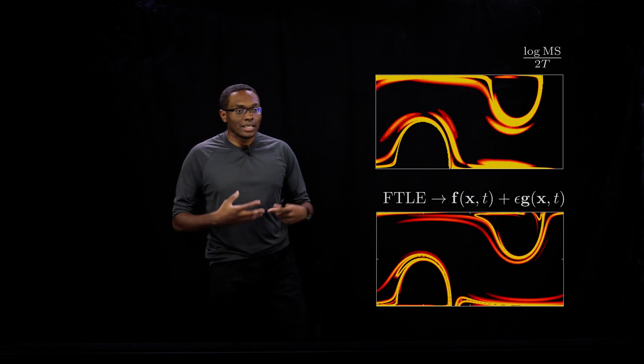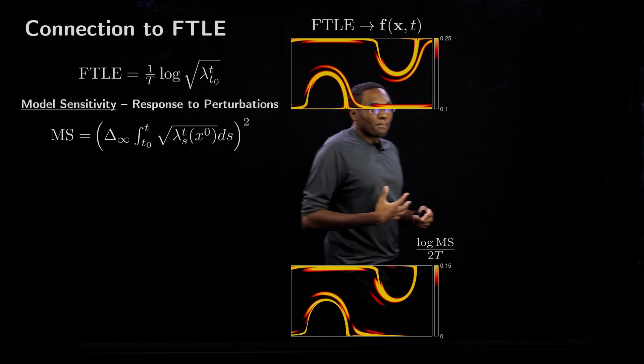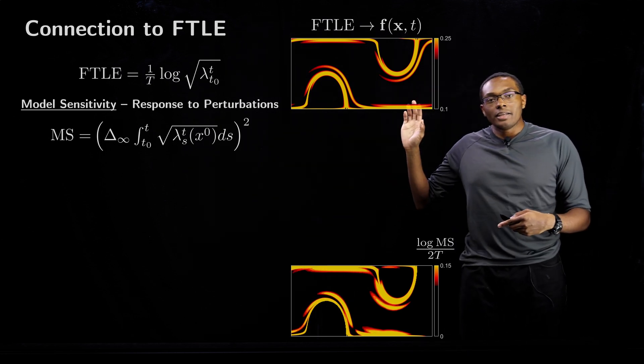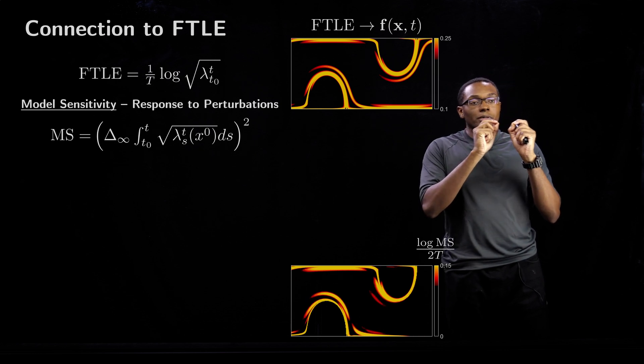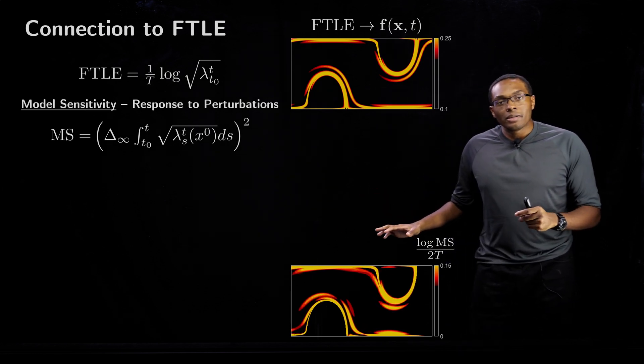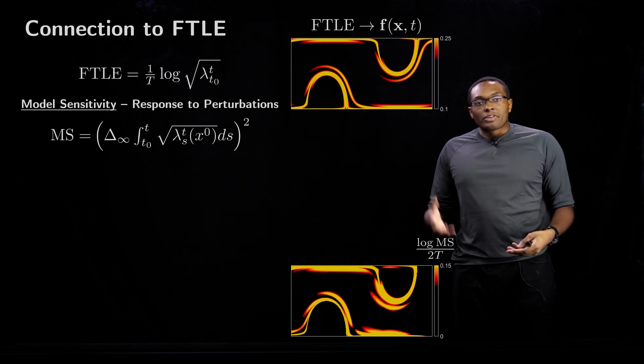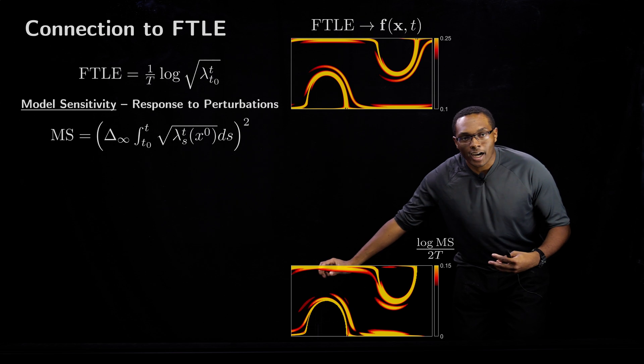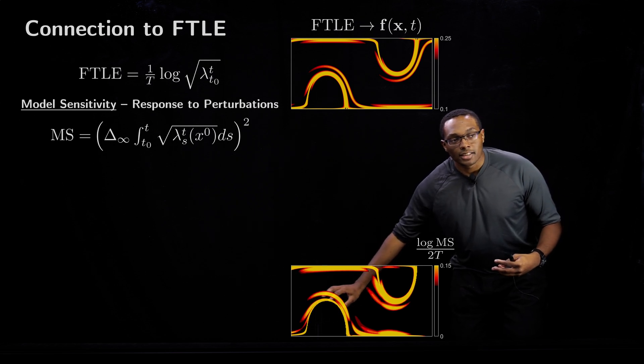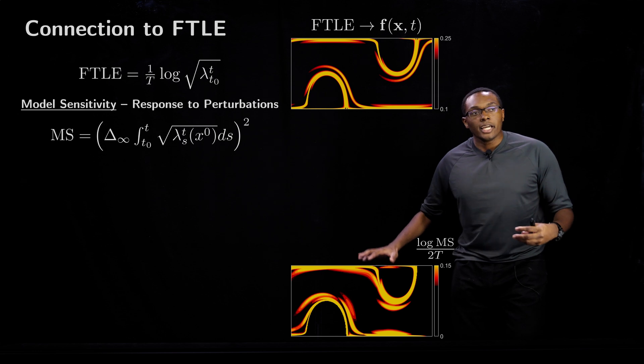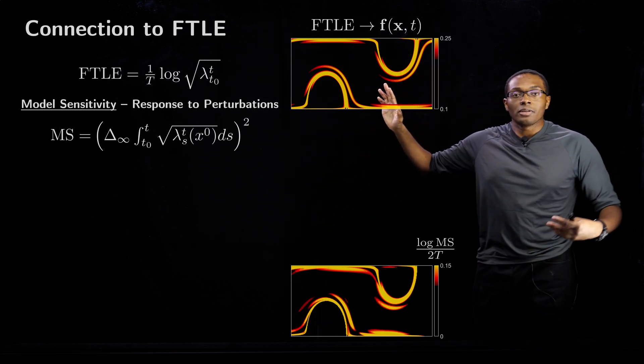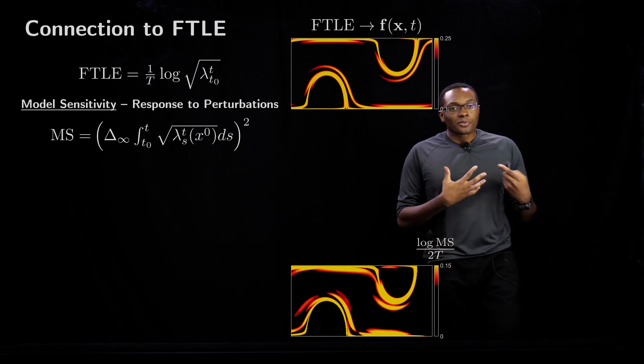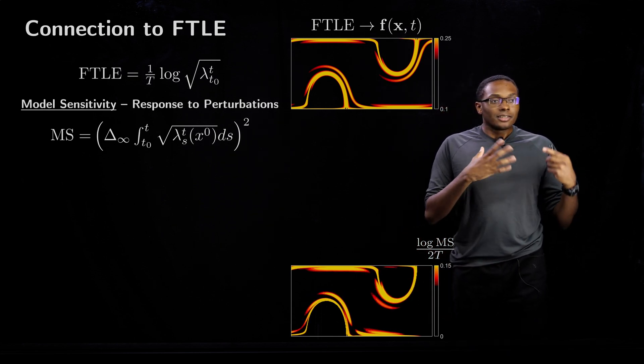One question we had was, what exactly does the mode sensitivity mean? If the FTLE field is the sensitivity of the flow with respect to initial particle positions, then the mode sensitivity field describes the sensitivity of the flow with respect to the actual perturbation G. You can expect high values of MS, such as here and here, to change this baseline FTLE flow field, which is exactly what we saw.